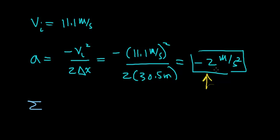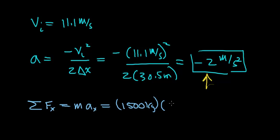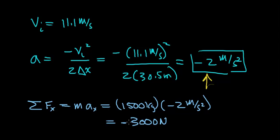Applying Newton's second law with this acceleration — summing forces in the x direction equals the mass of the car times the acceleration in the x direction — a 1500 kilogram car traveling at double the original velocity requires 4 times the force to stop it over the same distance. When you calculate this out, you get approximately 3000 newtons, which is about 4 times the 757 newtons required to stop the car at half the velocity.